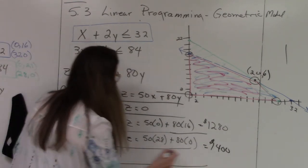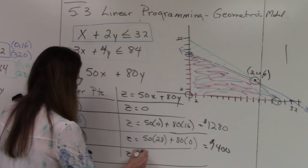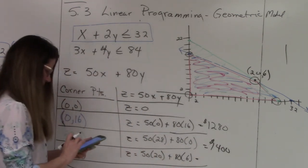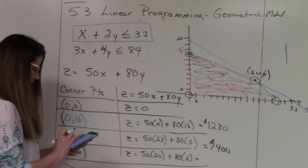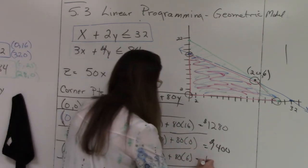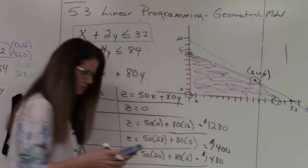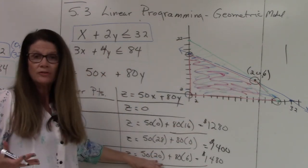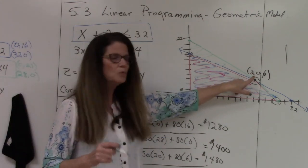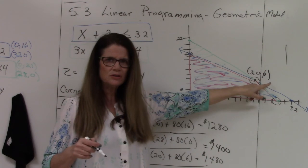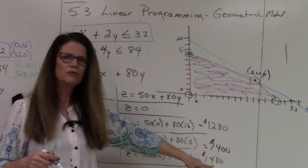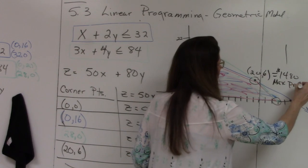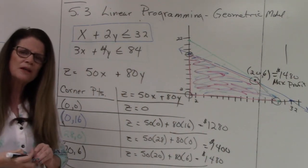Okay. And now I'm going to do my last corner point. So 20 and 6. So my objective is 50 times 20 plus 80 times 6. So 50 times 20 is a thousand plus 80 times 6 is $1,480. So the corner point at 20 comma 6 will give us the maximum profit. Now let's interpret this. Here's what this means. I can produce 20 standard tenths and 6 expedition tenths and make a maximum profit of $1,480. So that is our maximum profit. And that is linear programming using the geometric method.